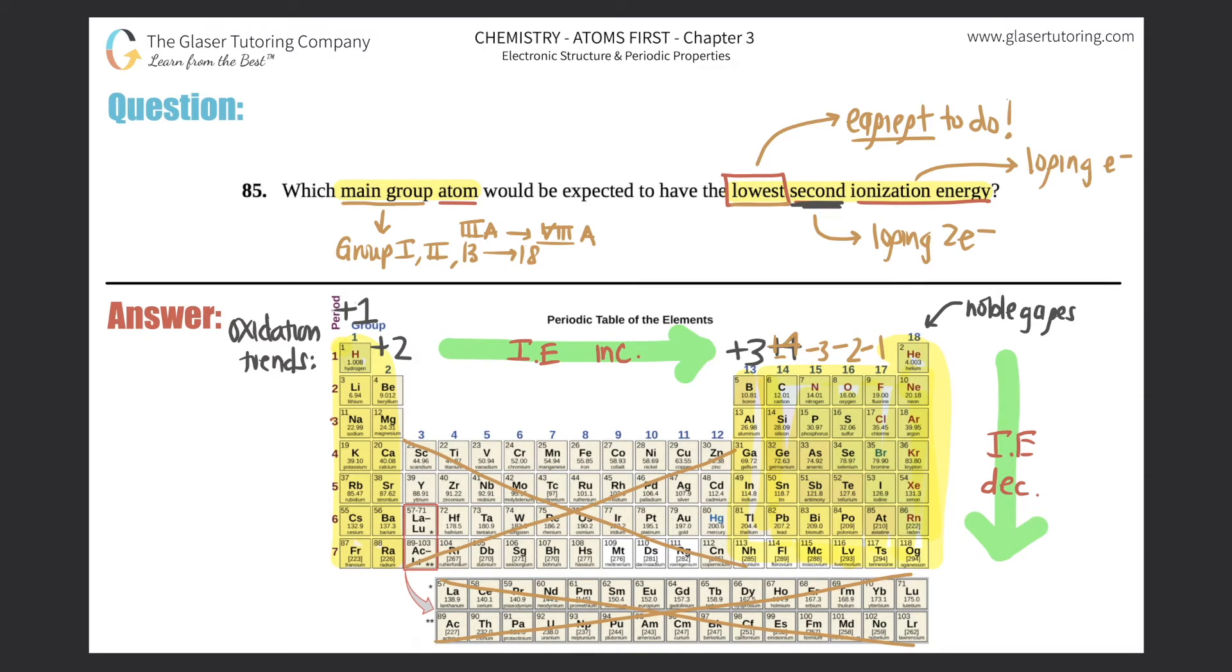This is super important because they want the lowest second ionization energy. Which one would want to lose its second electron? Lose means it has to be positive, so that gets rid of all of this—these want to gain and these don't lose or gain at all. You're either down to +1, +2, +3, or +4.